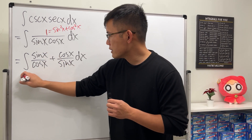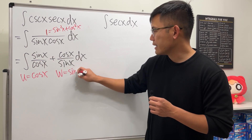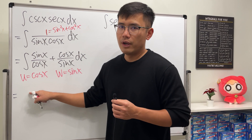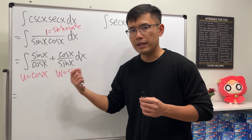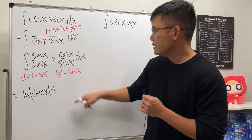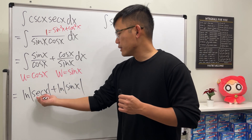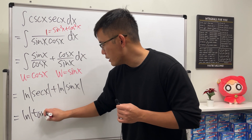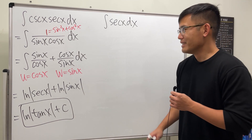For this one we can just do a u-substitution: u equals cosine x. And for this right here, let w equal sine x. I'll let you work out the details, but the first one gives us negative ln|cos x|, which we can write as ln|sec x|. Adding the second gives ln|sin x|. Adding two logarithms, we multiply inside: secant x times sine x is tangent x. So this is just ln|tan x| plus C.